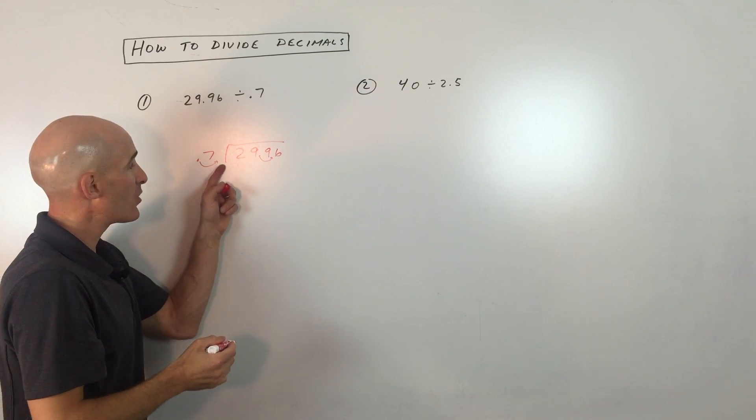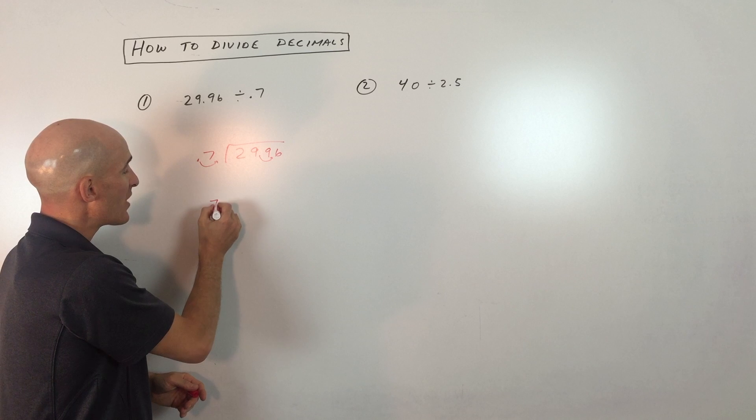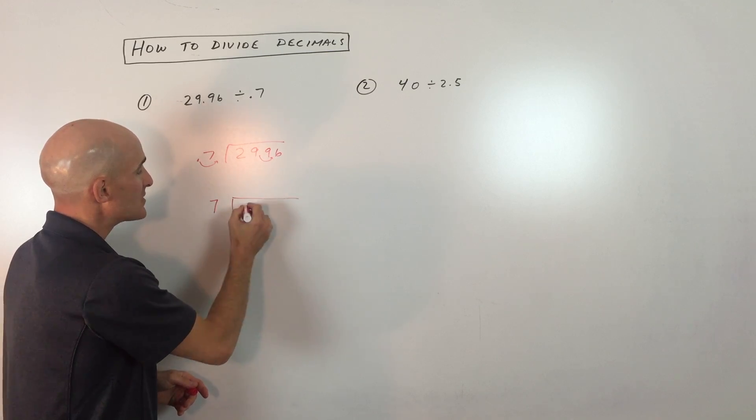I move this one place to the right, so I want to move this one place to the right. Let me just rewrite this. Now we have 7 going into 299.6.